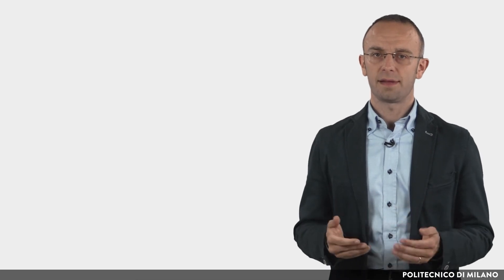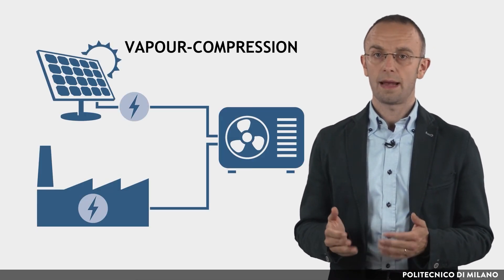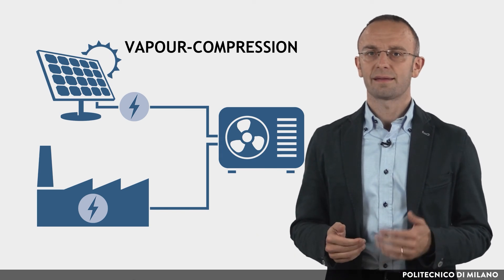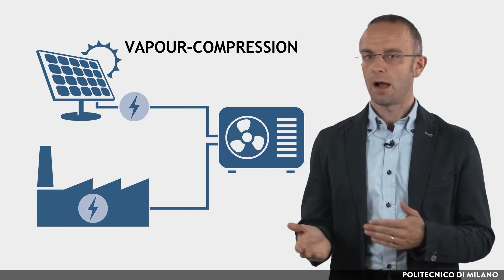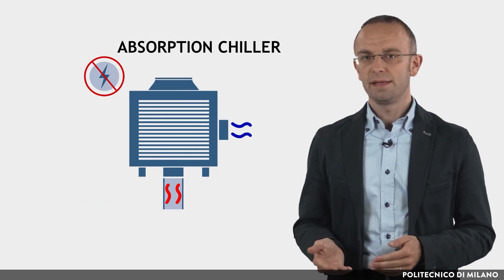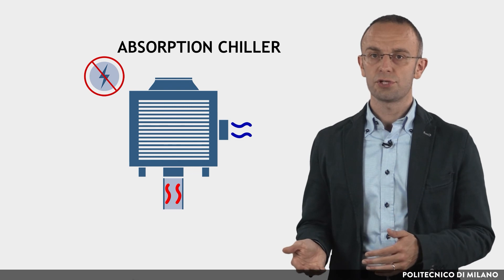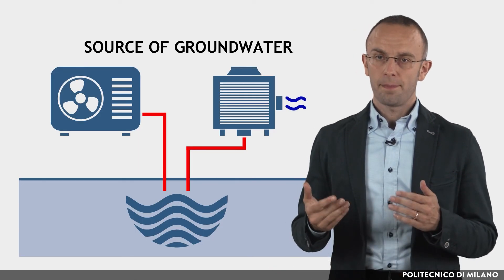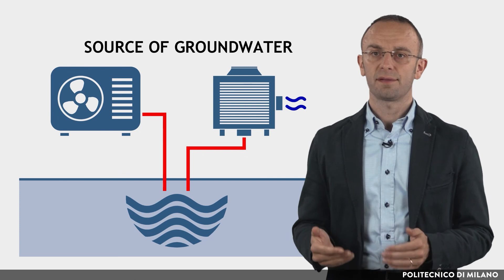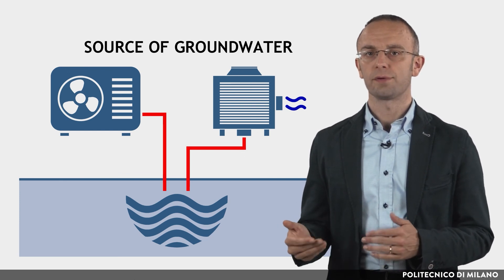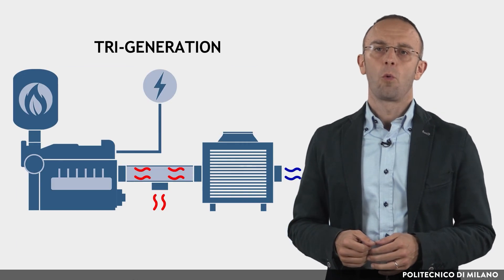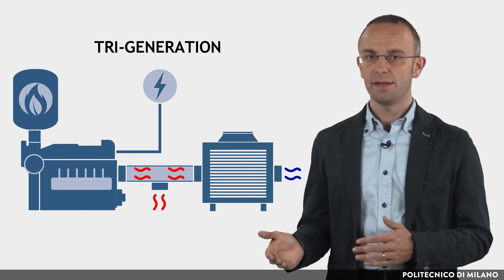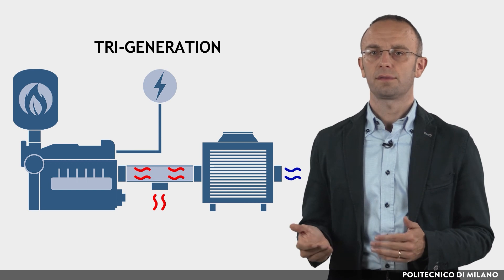In conclusion, if electricity from the grid is available, or renewable electricity can be easily generated on-site — for example from photovoltaics — electric heat pumps are a very good option for heating and cooling. In the presence of waste heat or low-cost heat sources, absorption chillers can be successfully used, especially if electricity is scarcely available. For both vapor compression and absorption heat pumps, the presence of groundwater sources allows increased system efficiency. Where there is a constant need for thermal energy and grid electricity is not always guaranteed, tri-generation represents an interesting technical solution.